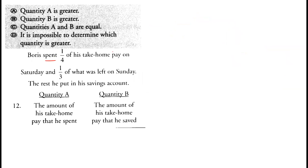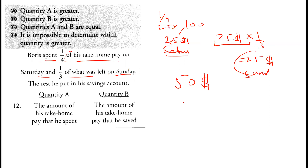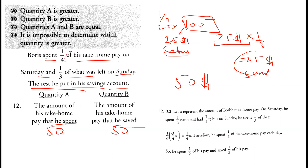Question twelve: Boris spent one-fourth of his take-home money on Saturday. Taking 100 as a base, he spent 25, leaving 75. On Sunday he spent one-third of what was left, which is 25. Total spent is 50. The amount spent (50) equals the amount saved (50), so both quantities are equal and option C is correct.